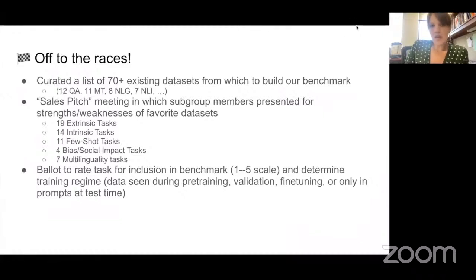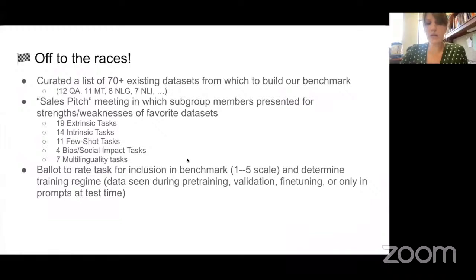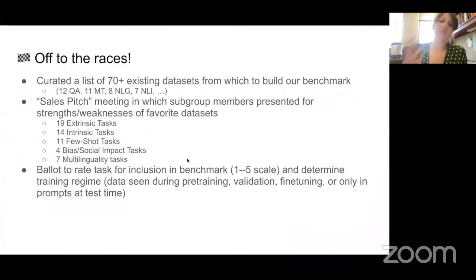Last week we convened as a full group, with representatives from all the subgroups coming together to make pitches for the datasets among these 70 that they felt were most appropriate for BigScience's goals. They presented strengths and weaknesses of each dataset and focused on what research questions those datasets would answer. We had a decent number of pitches from each group — for example, 19 different extrinsic tasks, seven social and bias tasks, and seven multilinguality ones. Following that presentation, we asked for a vote from everyone in the group, ranking each presented task on a scale from one to five on how important it was to include in our final benchmark, as well as opinions about what type of training on the task should be allowed.